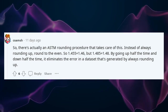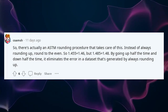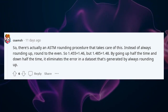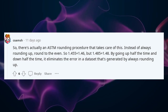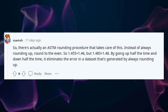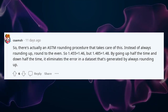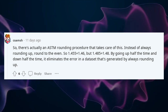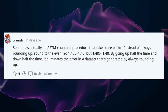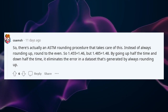There's actually an ASTM rounding procedure that takes care of this. Instead of always rounding up, you round to the even. So 1.455 becomes 1.46, but 1.485 becomes 1.48. By going up half the time and down half the time, it eliminates the error in a dataset that's generated by always rounding up.